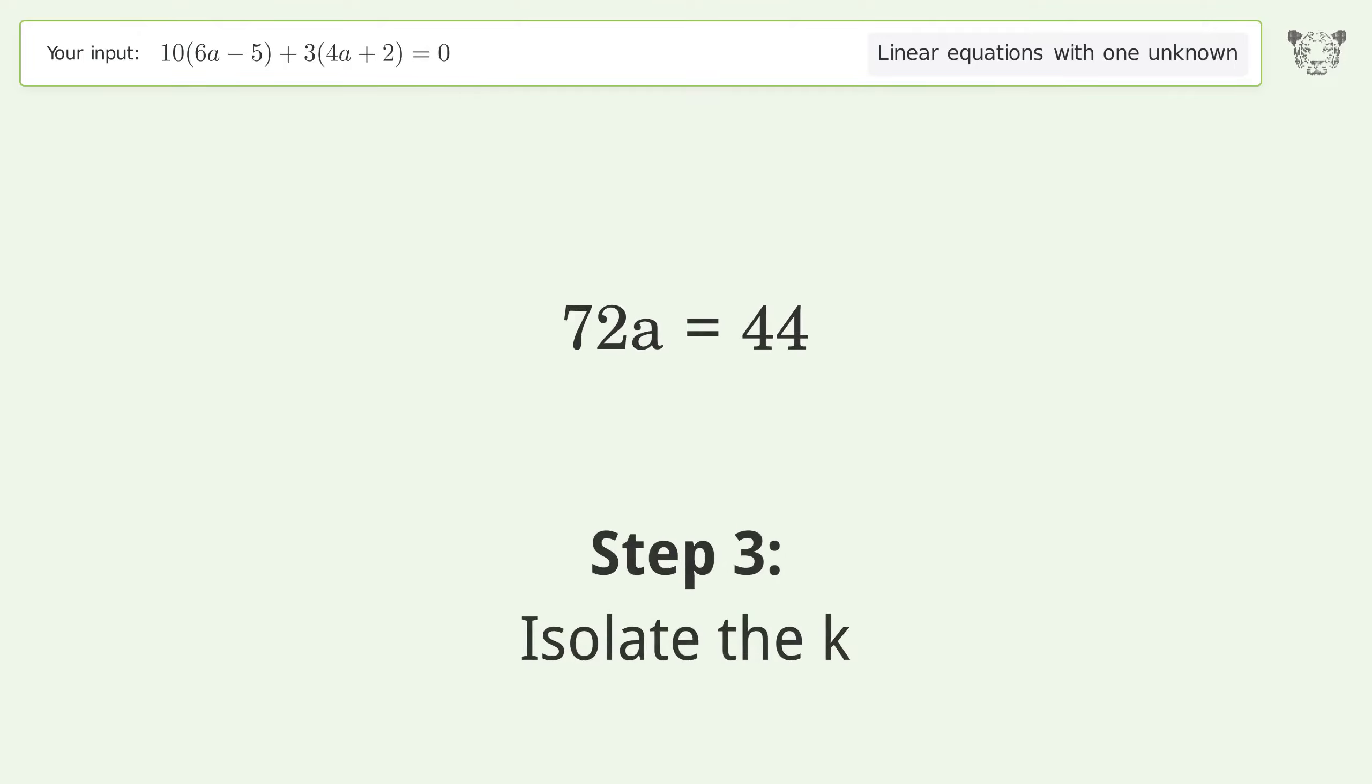Isolate the variable. Divide both sides by 72. Simplify the fraction.